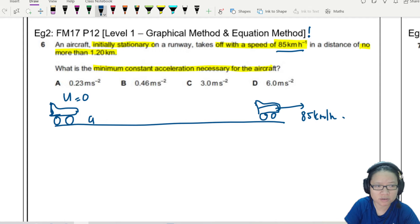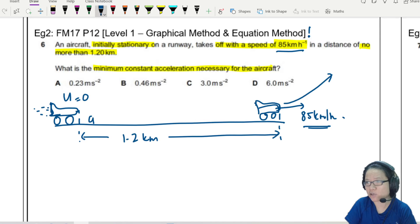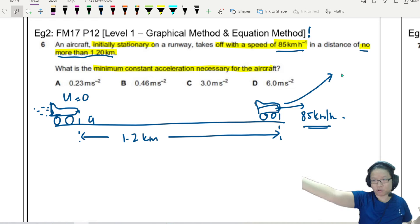At U equal to zero here, then getting ready to go. By the time it lifts off, it must go at 85 km per hour. We know there's a distance in the runway. It says that the runway distance is 1.2 km. So if you don't accelerate large enough, what will happen is you won't hit your takeoff speed. That is why they say no more than 1.2 km. This is the maximum allowed distance for you to accelerate.